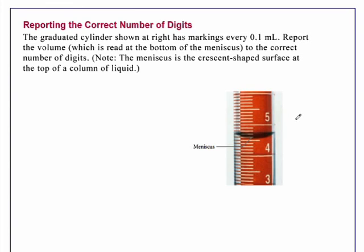Note, the meniscus is the crescent-shaped surface at the top of the column of liquid. This is the meniscus, there's the curvature.